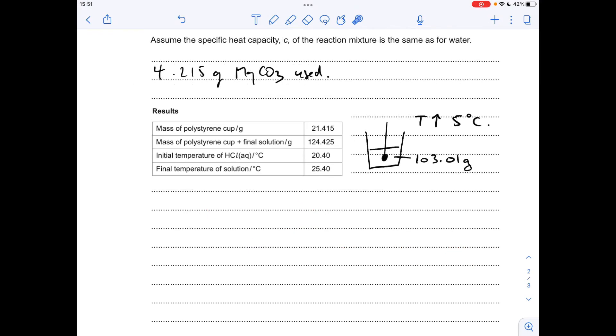Okay, so there's all the information I'm going to need for the calculation of delta H2. We've got a calorimetry experiment, so we can work out the mass of the solution that was in that polystyrene cup by subtracting this value from this. So the solution whose temperature was changed had a mass of 103.01 grams.